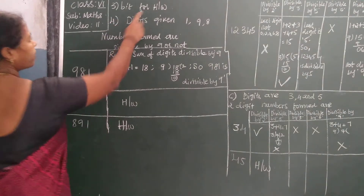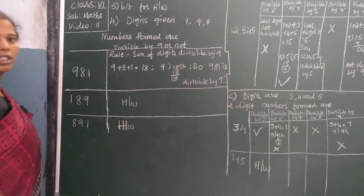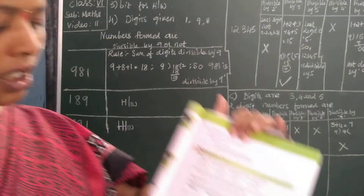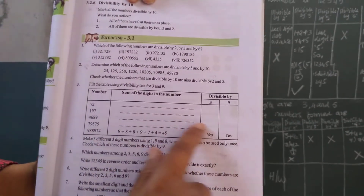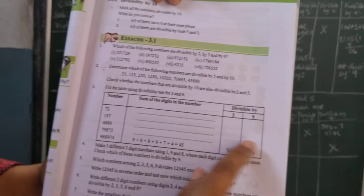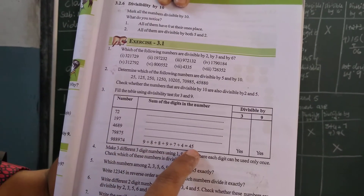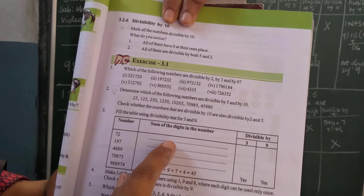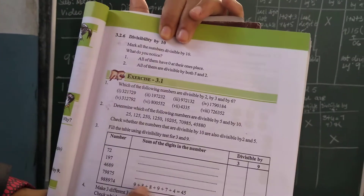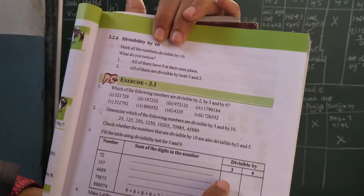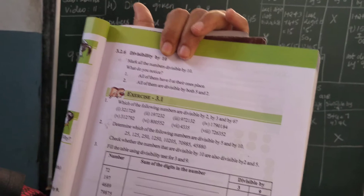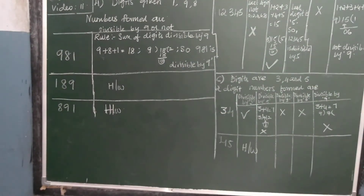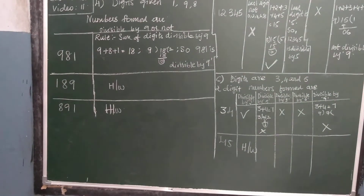Third bit, you have to do for homework children. The digits are there — you have to find out whether the rule for 3 and the rule for 9 are the same or not.